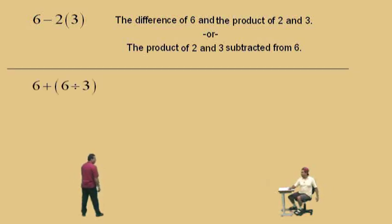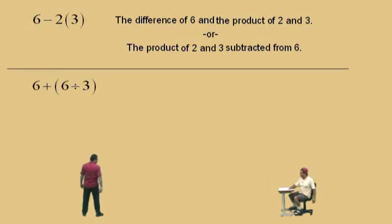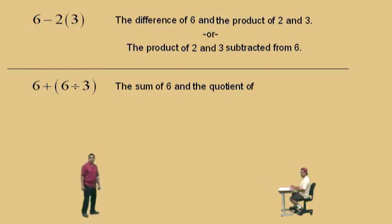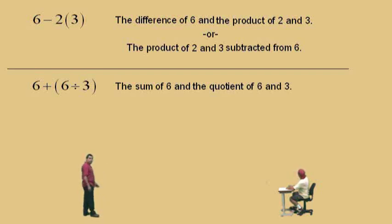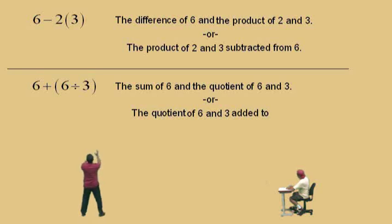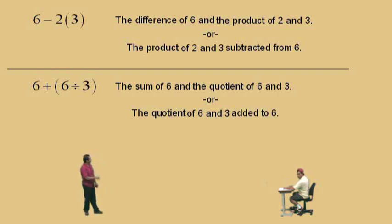Let's do one more problem. This one right here — don't get scared. Tell me what you see first, Charlie. The sum — the sum of what two things? Six and the quotient. Six and the quotient — very nice. Now the quotient of what? Six and three — the quotient of six and three. Very nice, and that's it. Here's another way: we can start with the quotient. This is the quotient of six and three added to — the quotient of six and three being added to what, Charlie? Six. To the six. So two different ways of answering that.